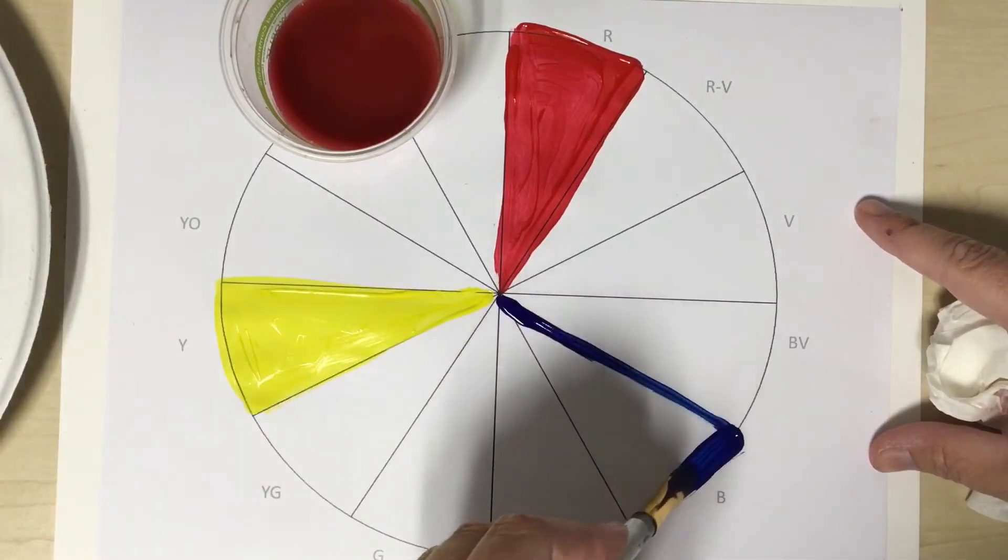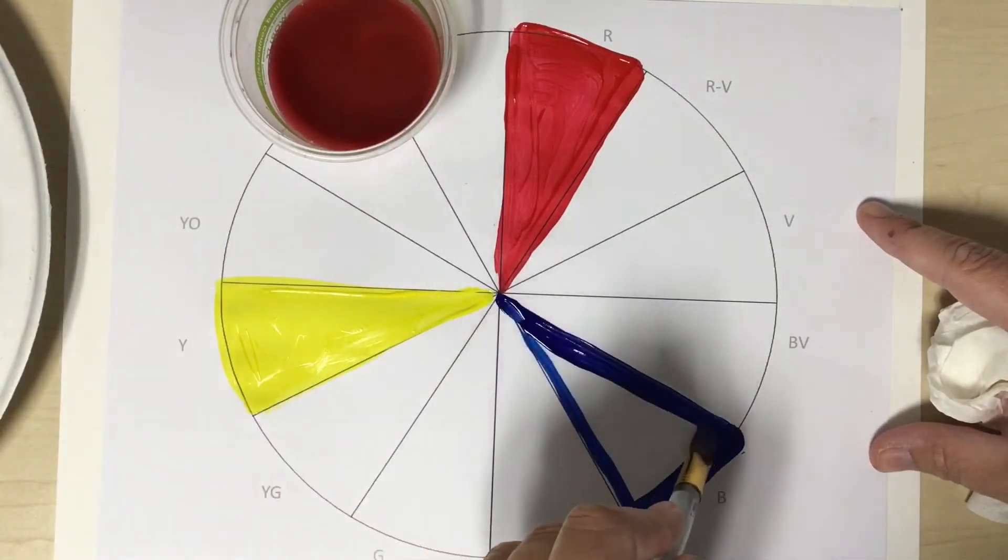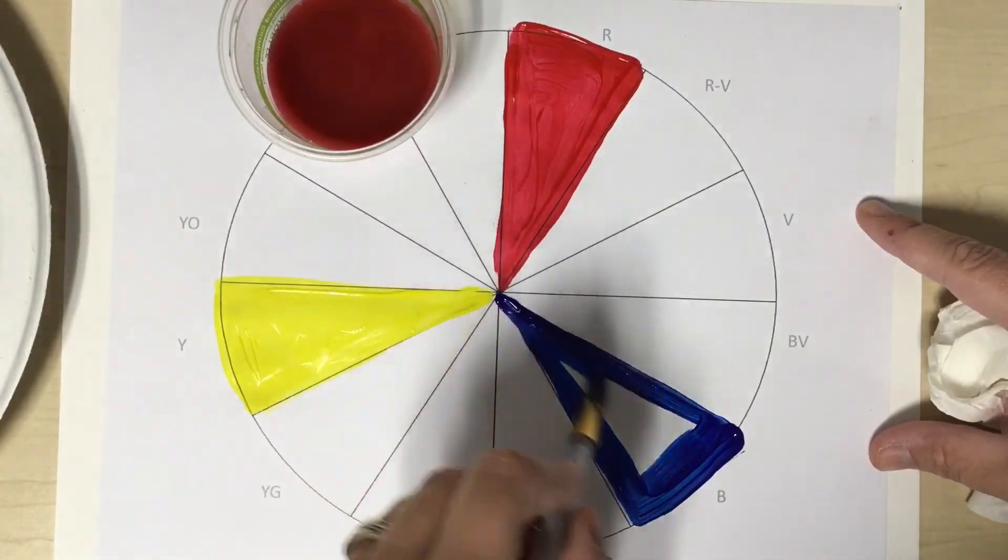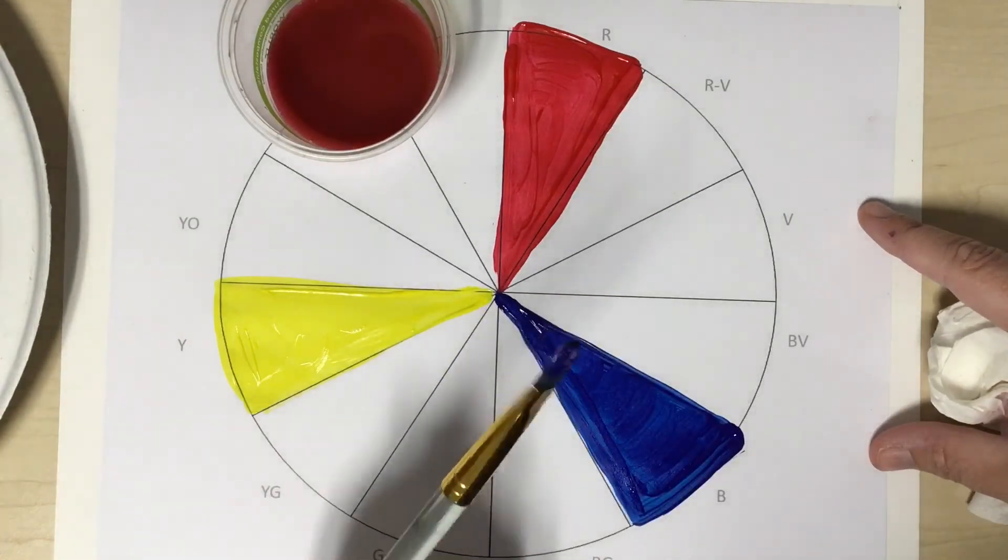Outline the pie first before I fill in that color. You made your three primary colors!